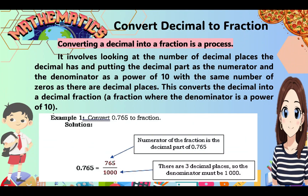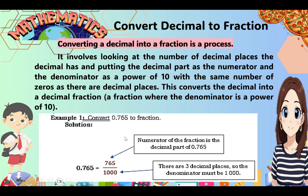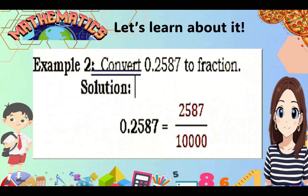Example number 1: Convert 0.765 to a fraction. Our numerator is the decimal part, which is 765. The denominator is equal to the number of decimal places — there are 3 decimal places in 0.765, so there should also be 3 zeros in the denominator. So our denominator is 1,000, giving us 765 over 1,000.